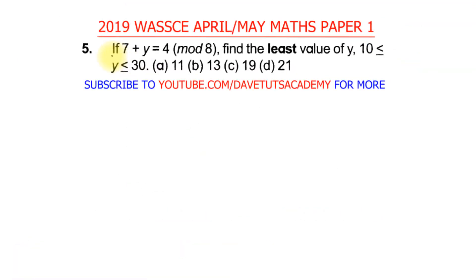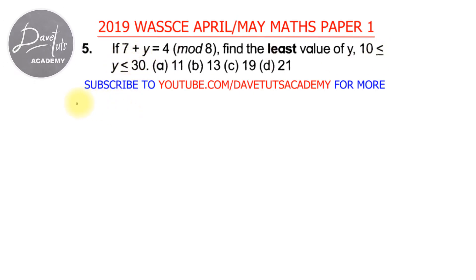In this question we are told that if 7 plus y is equal to 4 under modulo 8, we have to find the least value of y. The range of values for y is given as 10 is less than or equal to y which is less than or equal to 30.